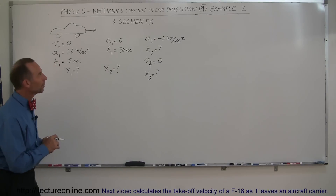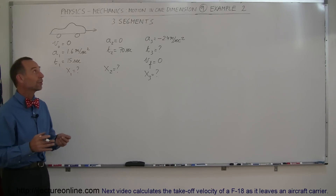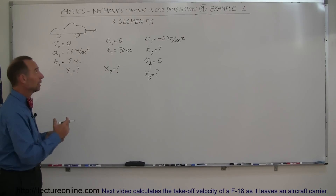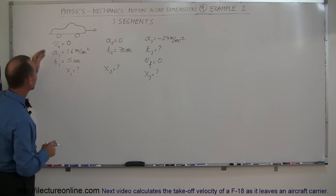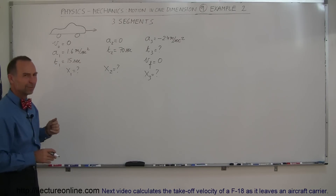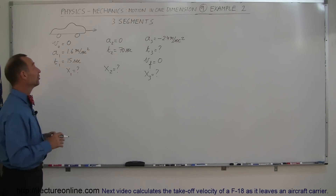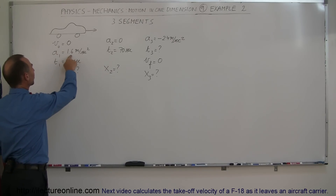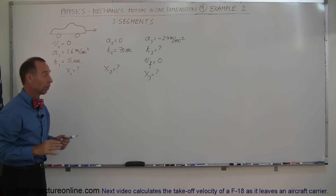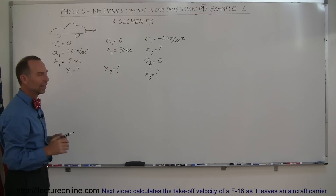Here's our second example of how we can use our equations of motion and graphing to solve another motion problem in one dimension. We have a car — it starts at zero velocity and accelerates at 1.6 meters per second squared for 15 seconds. The question is: how far did it travel during that first 15 seconds?